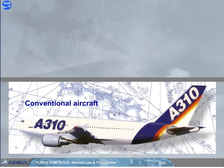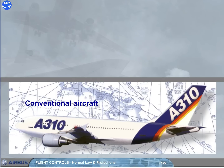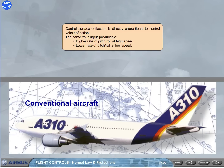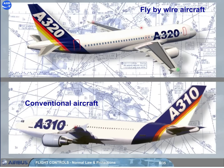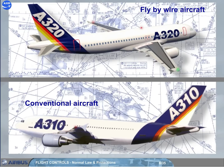On a conventional aircraft, control surface deflection is directly proportional to control yoke deflection. The same yoke input produces a higher rate of pitch and roll at high speed, and a lower rate at low speed. On the A320, control surface deflection is not directly proportional to side stick deflection. A side stick deflection gives a rate demand to the flight control computers, which set control surface deflection to meet that demand — large at low speed, small at high speed.